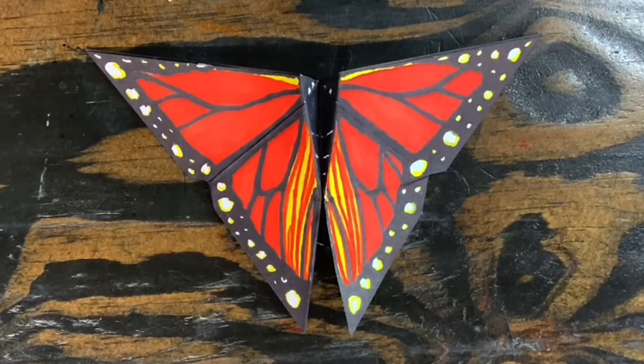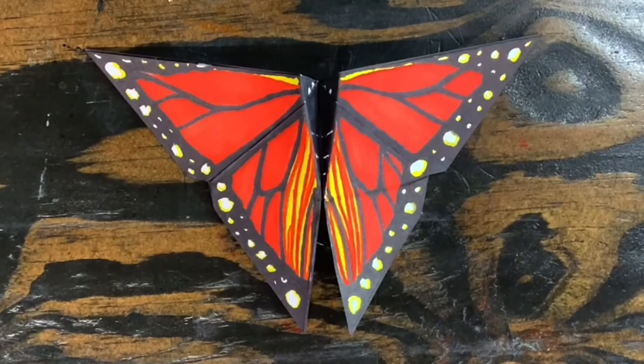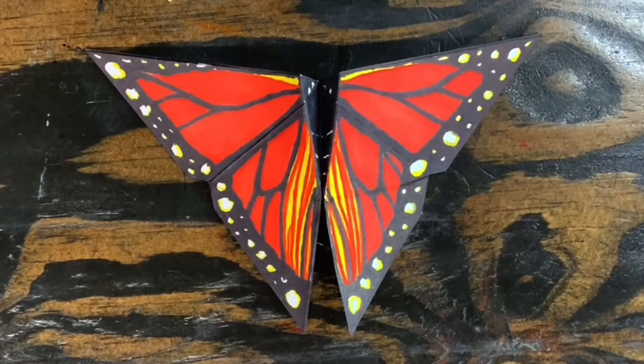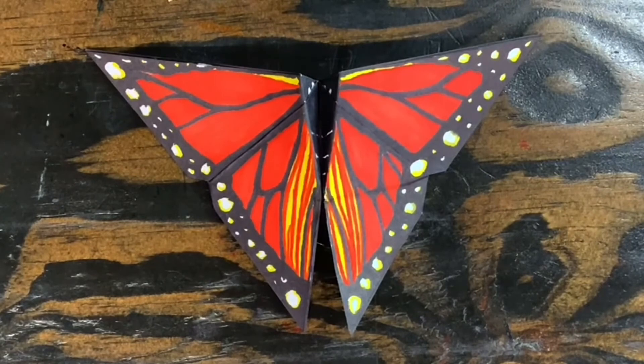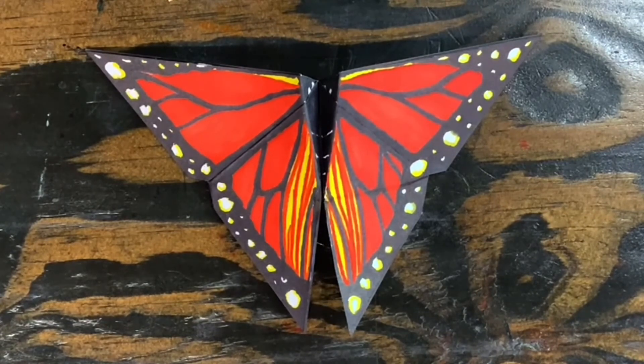As realistic as it looks, it's still origami. So it's not exactly the same as the real thing. But I think it works great. And I think that most people would be able to recognize that this is a monarch butterfly, if you knew what a monarch butterfly was.